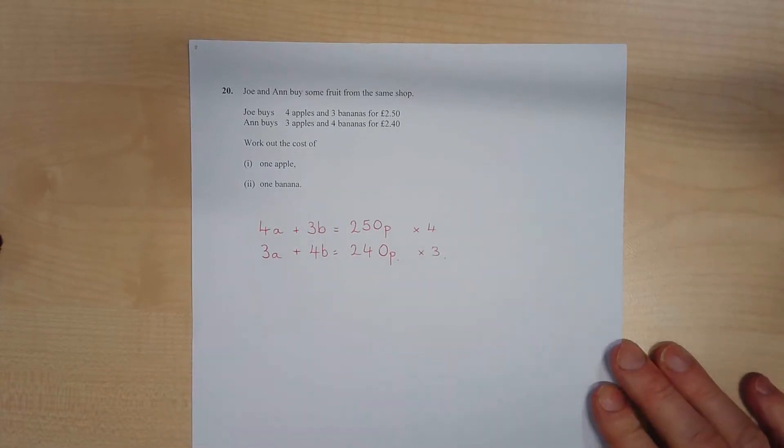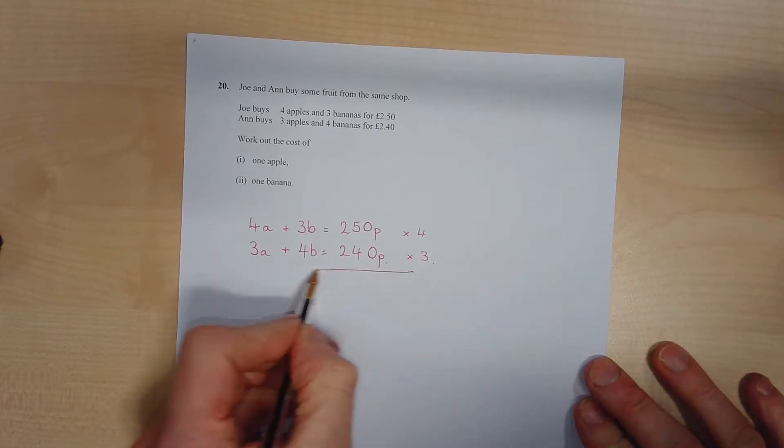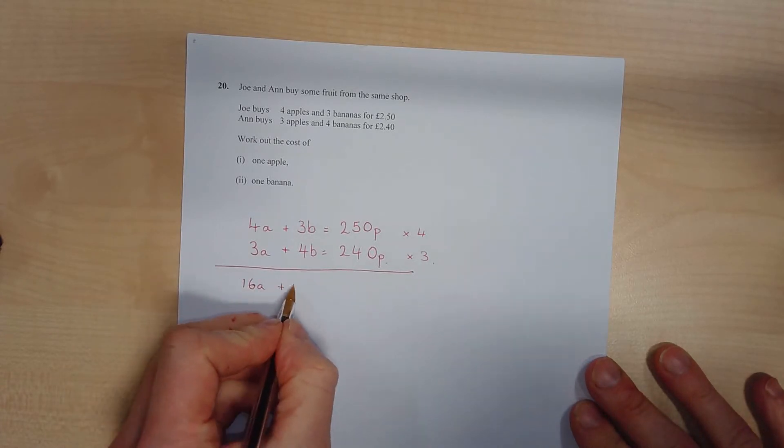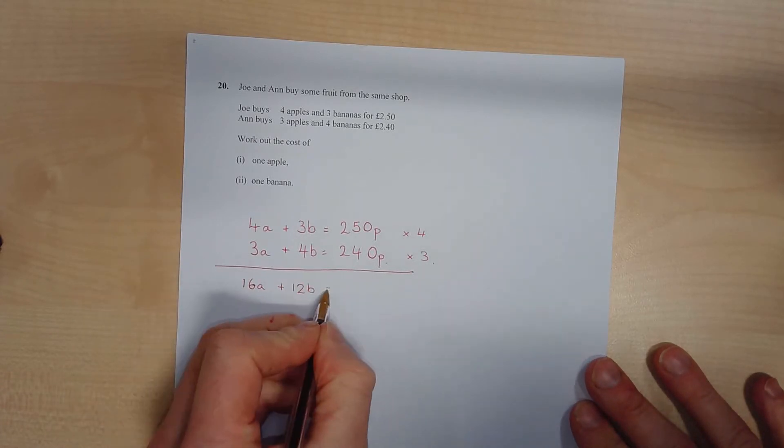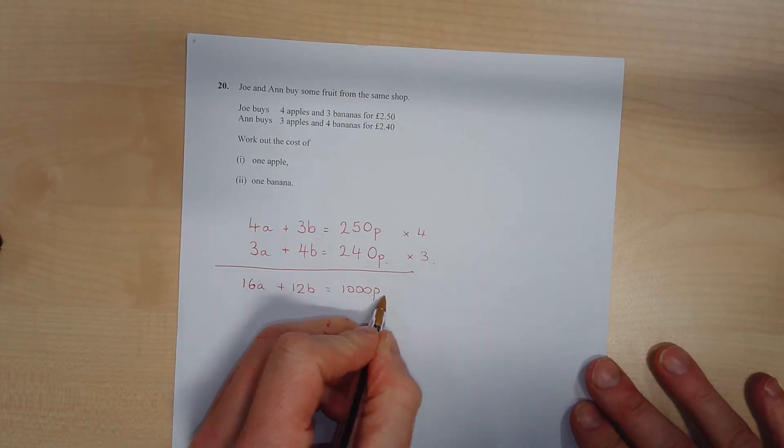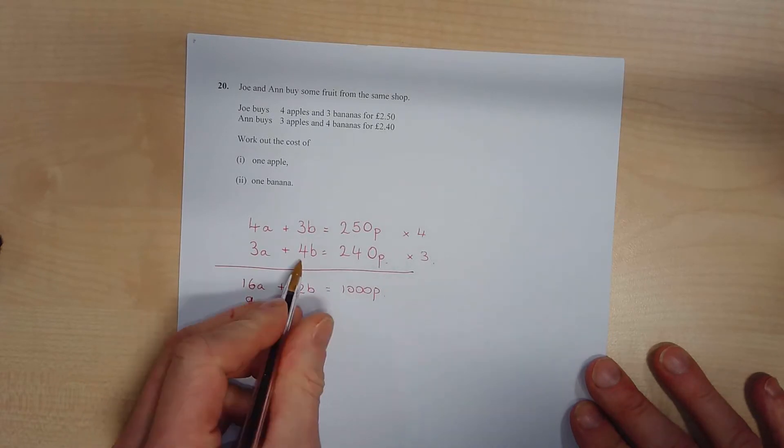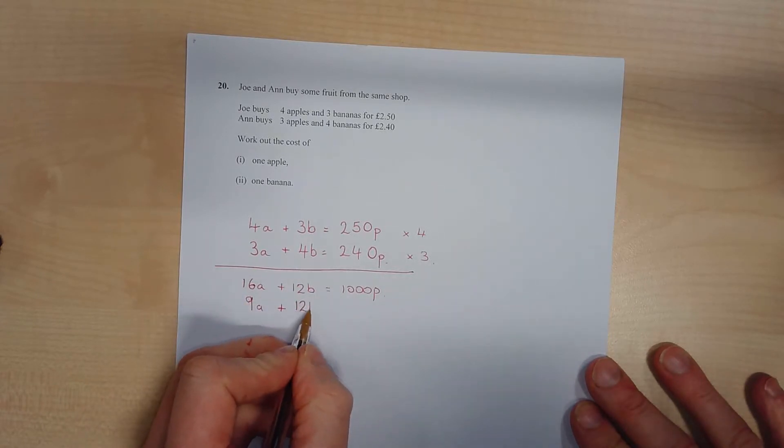This one by 3, and that's going to give me two new equations. So 16a plus 12b is now 1000p.